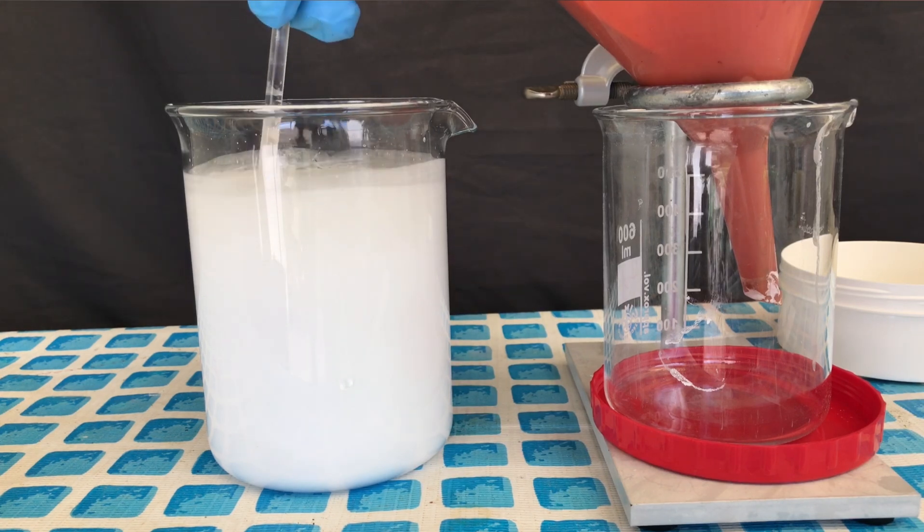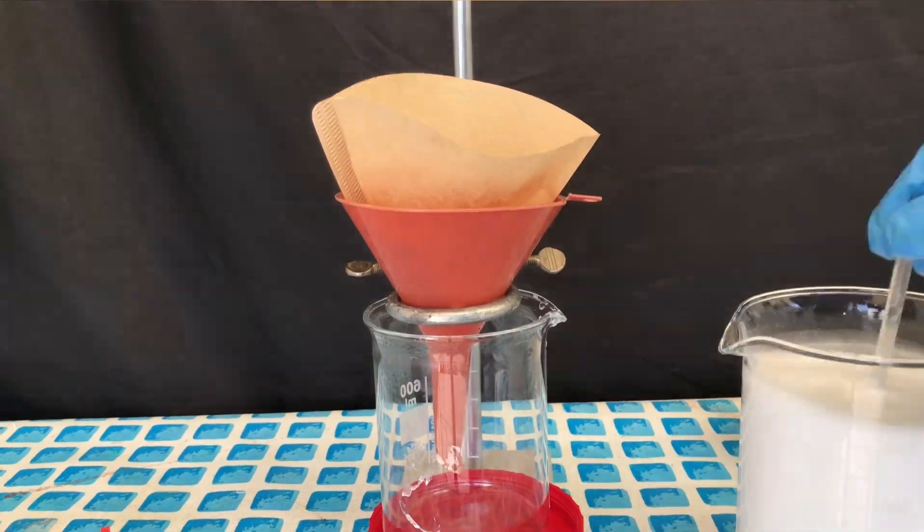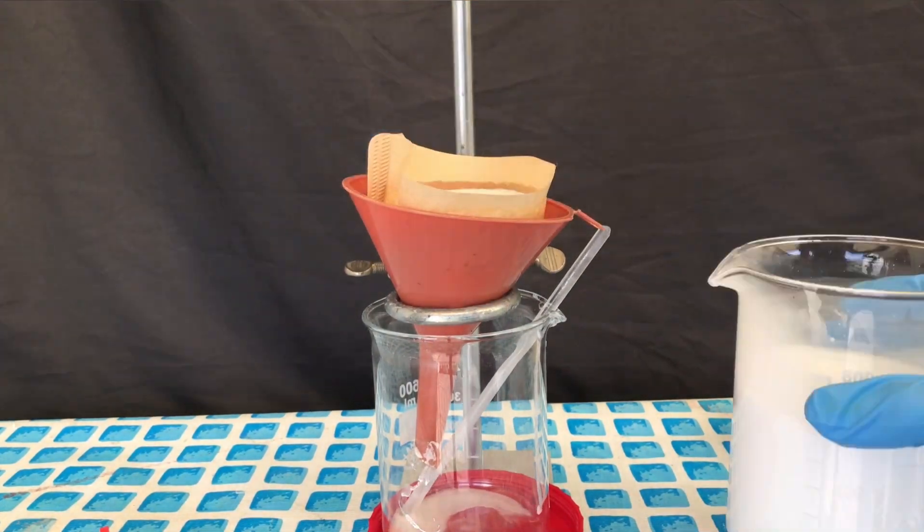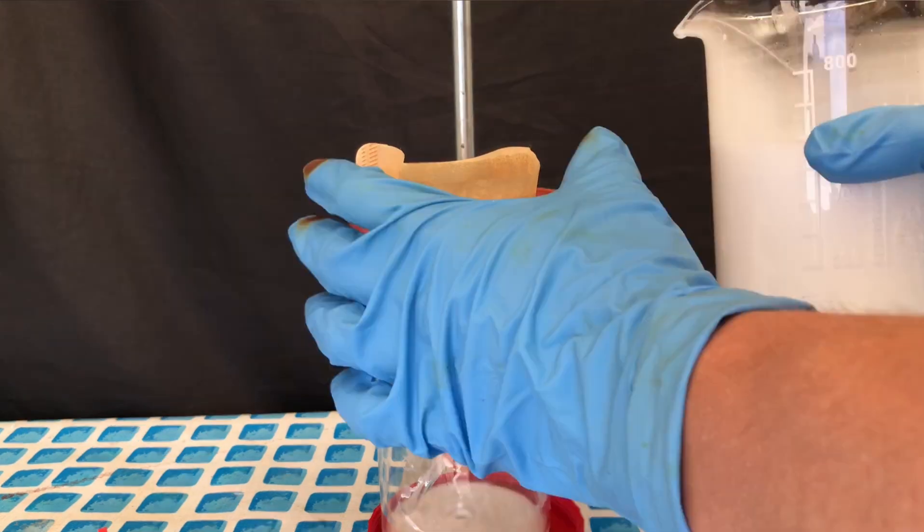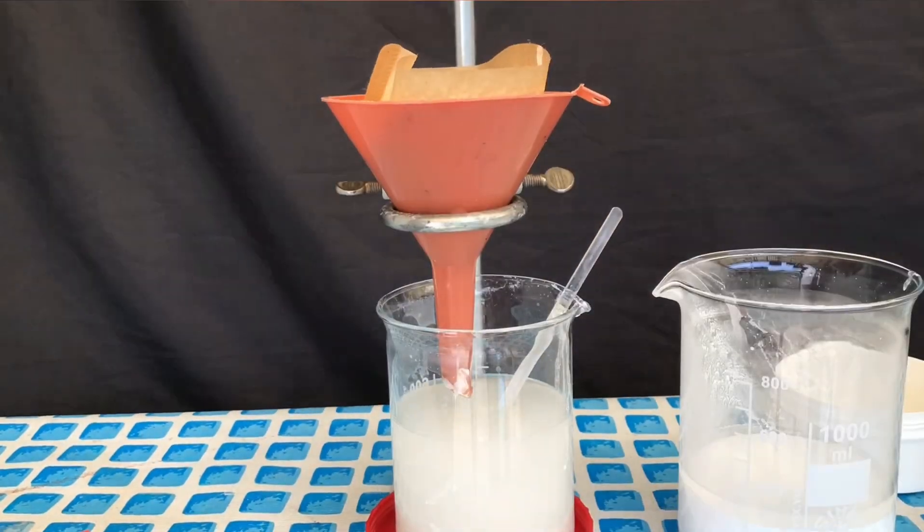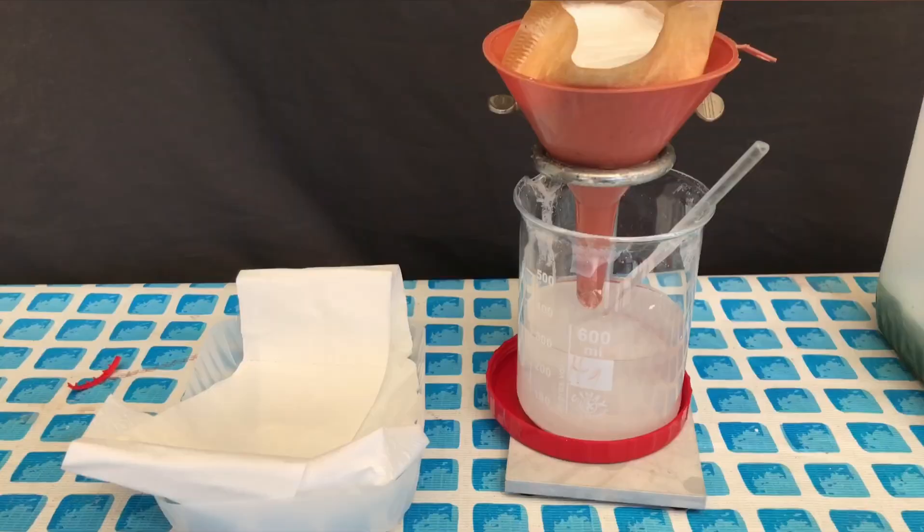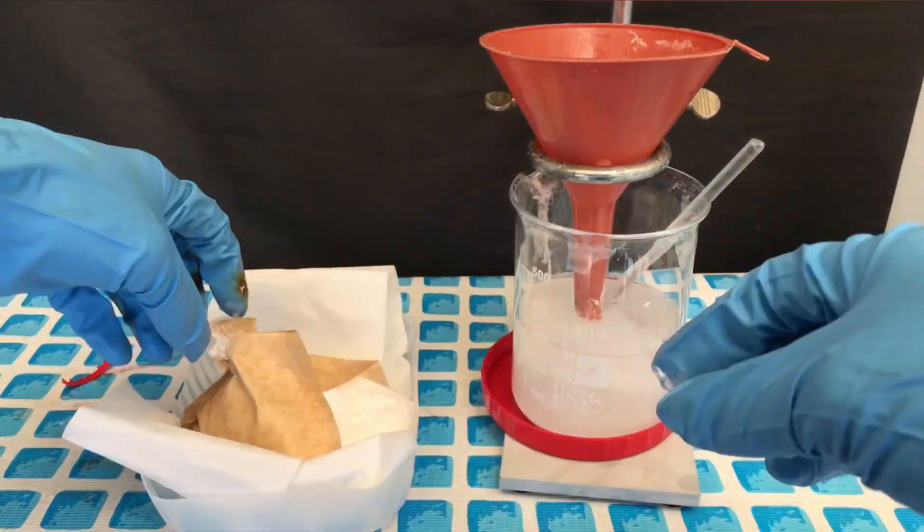The solution was diluted a couple of times and afterwards a gravity filtration was performed. The gravity filtration turned out to take longer than expected but it worked out. All waste solution and all waste was transferred to a canister with water soluble and not water soluble lead waste.